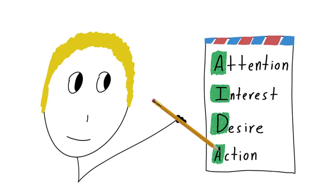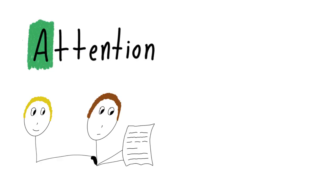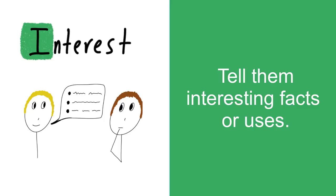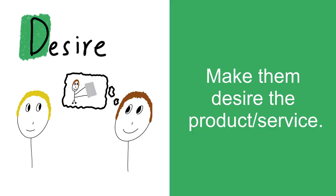Here's what the ADA formula is in a nutshell. It's an acronym — it's A-I-D-A. That's all you got to remember. It means attention, interest, desire, and action. The attention part means you grab someone's attention with something catchy and relevant. The interest part means you tell them interesting facts or uses of the product. The desire part makes them desire the product or service, and the action part gets them to take a specific action.